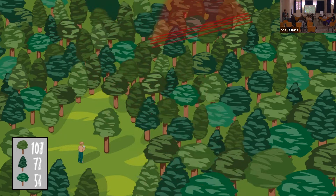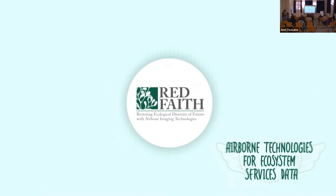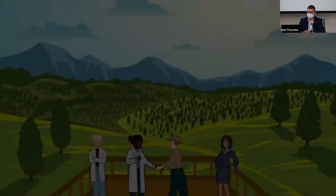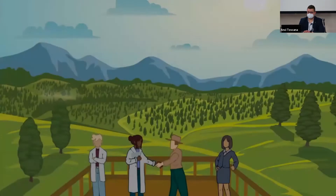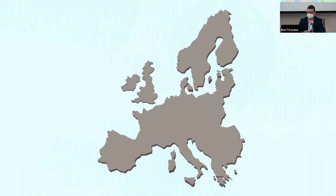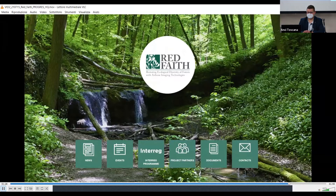By using remote sensing, we can learn more about forests quickly and cost-effectively, but forest managers have to learn new ways of obtaining and interpreting data. The RedFaith project is a good example of how to obtain crucial information using airborne technologies. RedFaith uses cutting-edge drone technology and high-resolution aerial and satellite images to gather, evaluate, and translate data easily interpreted by forest experts and decision makers. Visit www.redfaith.hu to download free studies and learn more. Visit the Interreg Europe Progress website to learn more about our project activities.